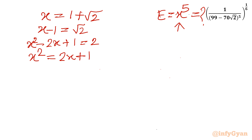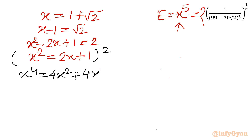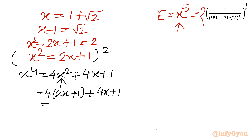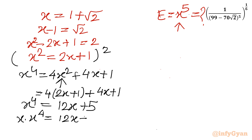Squaring x² equals 2x plus 1 gives x⁴ equals (2x plus 1)², which is 4x² plus 4x plus 1. Substituting x² equals 2x plus 1: x⁴ equals 4 times (2x plus 1) plus 4x plus 1, which equals 8x plus 4 plus 4x plus 1, so x⁴ equals 12x plus 5. Now our requirement is x power 5, so I will multiply both sides by x: x⁵ equals 12x² plus 5x.